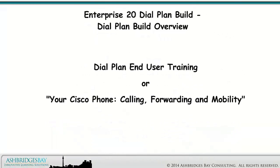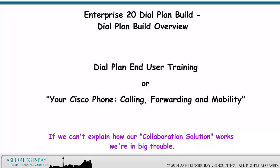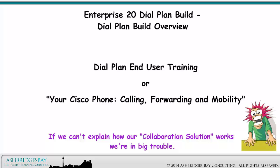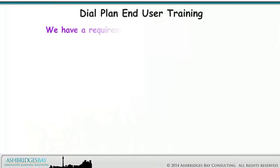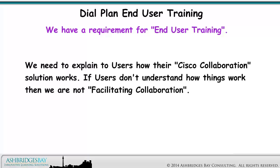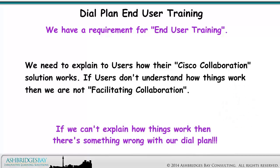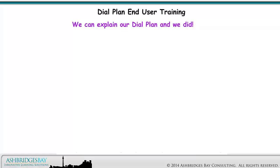Dial Plan End User Training — your Cisco phone, calling, forwarding, and mobility. If we can't explain how our collaboration solution works, we are in big trouble. We have a requirement for end user training. We need to explain to users how their Cisco collaboration solution works. If users don't understand how things work, then we are not facilitating collaboration. If we can't explain how things work, then there's something wrong with our Dial Plan. We can explain our Dial Plan, and we did.